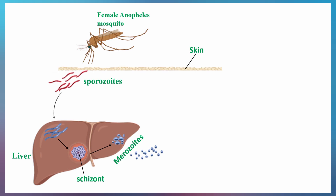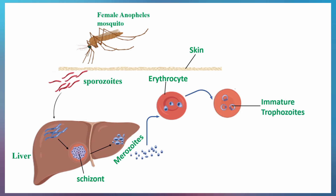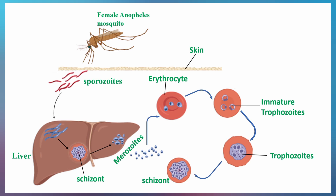When the merozoites enter the blood, they attack the erythrocytes. Inside the erythrocytes, the merozoites develop into immature trophozoites, which are ring-shaped. These immature trophozoites then develop into mature trophozoites, which further develop into schizonts. The schizonts burst again to release more merozoites into the blood to attack other red blood cells.